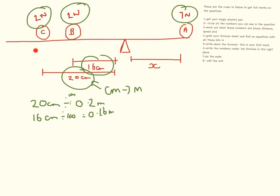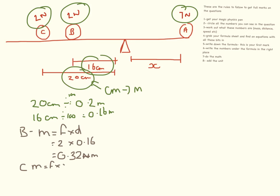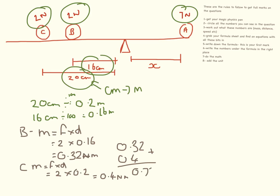We need to do two calculations on this side — I'll call them B and C. For B: moment equals force times distance. The force is 2 newtons, the distance is 0.16 metres, so 2 times 0.16 equals 0.32 newton metres. For C: moment equals force times distance, which equals 0.4 newton metres. The total moment on this side is 0.32 plus 0.4 equals 0.72 newton metres.